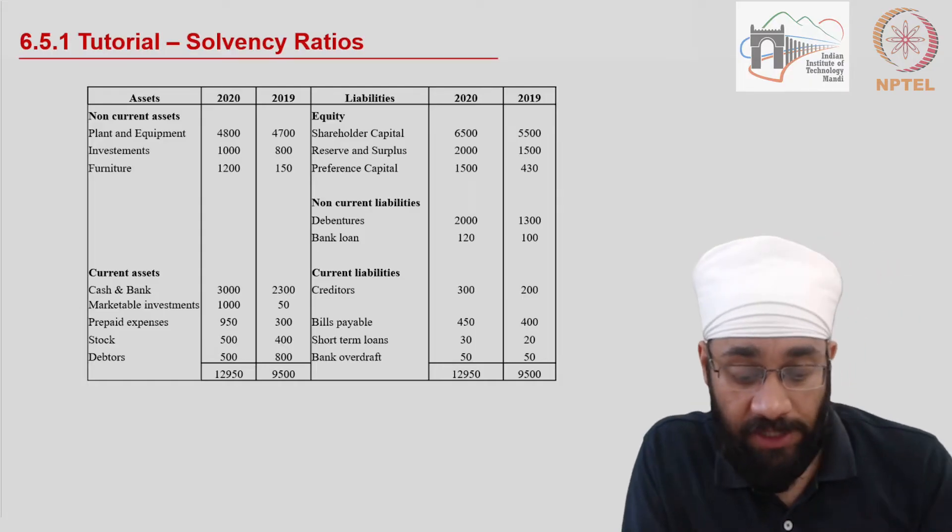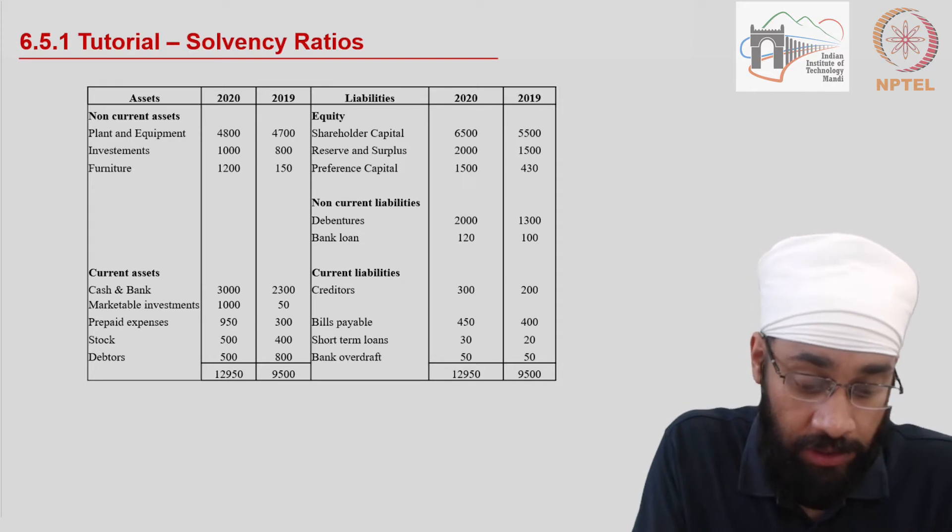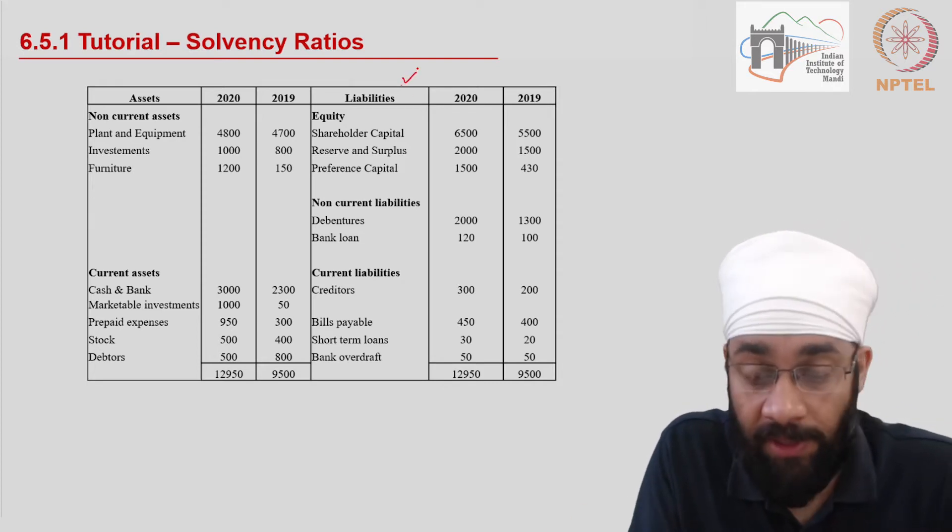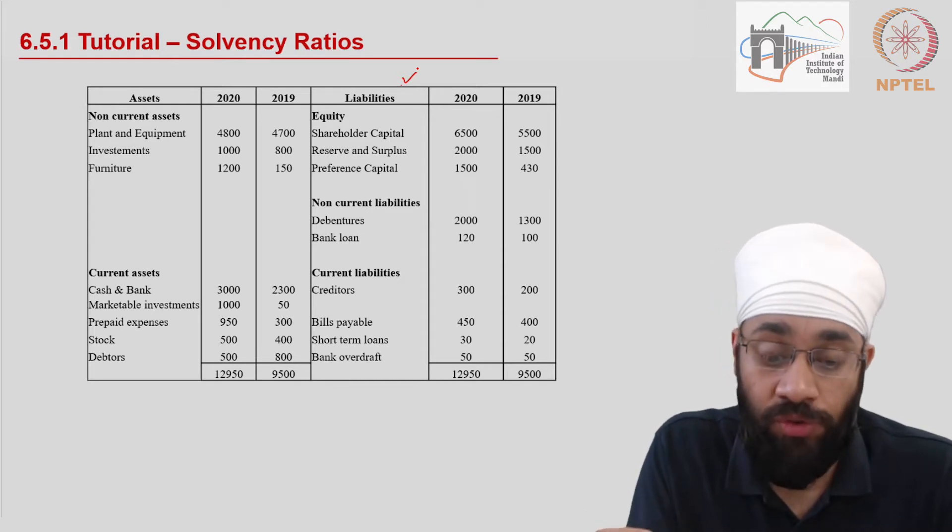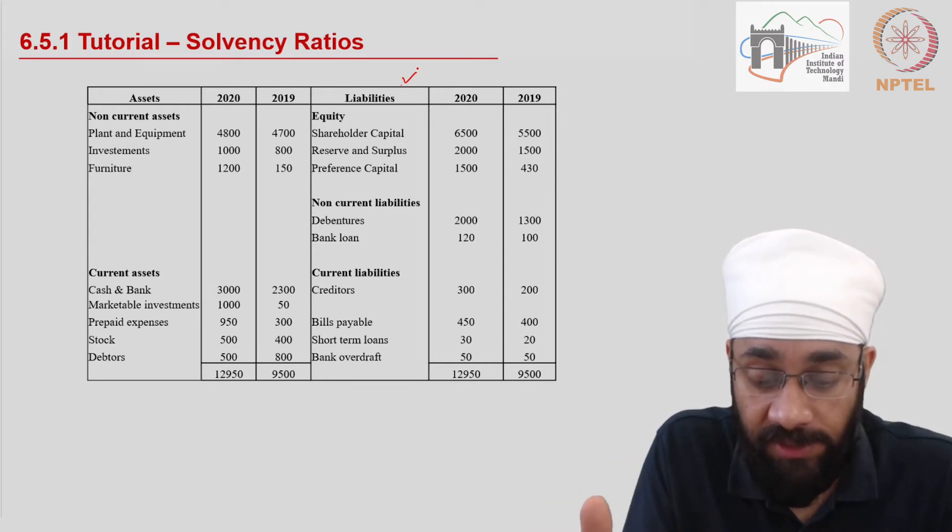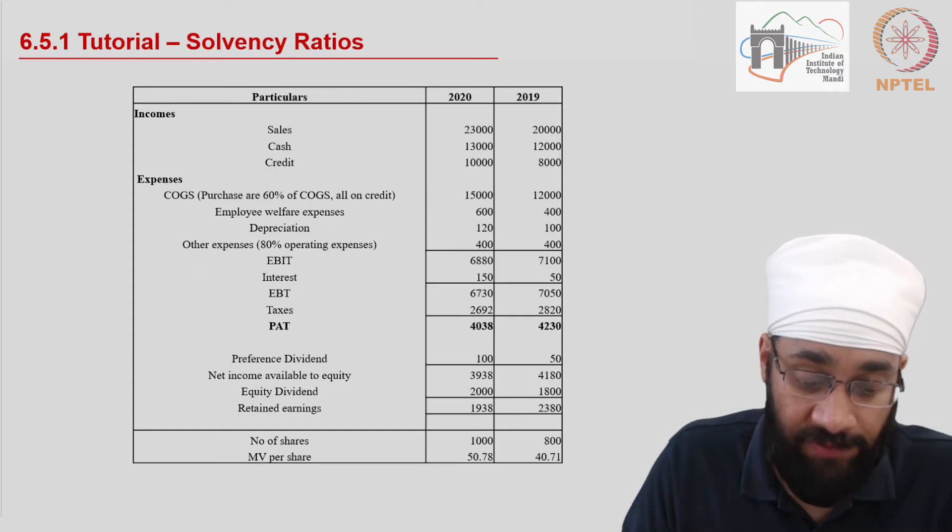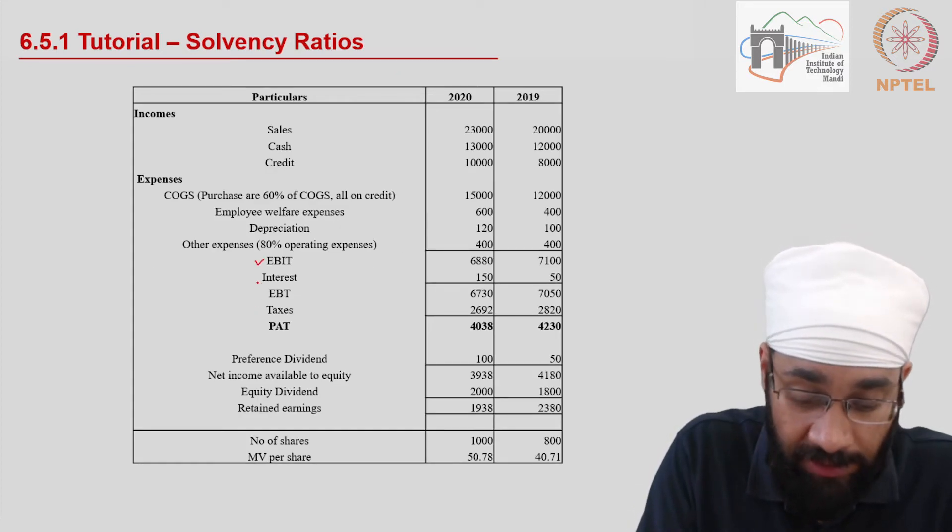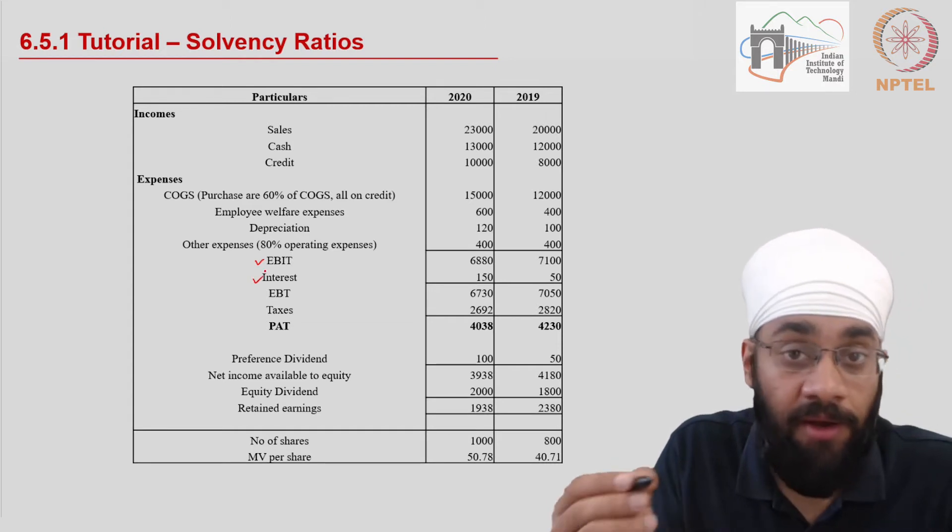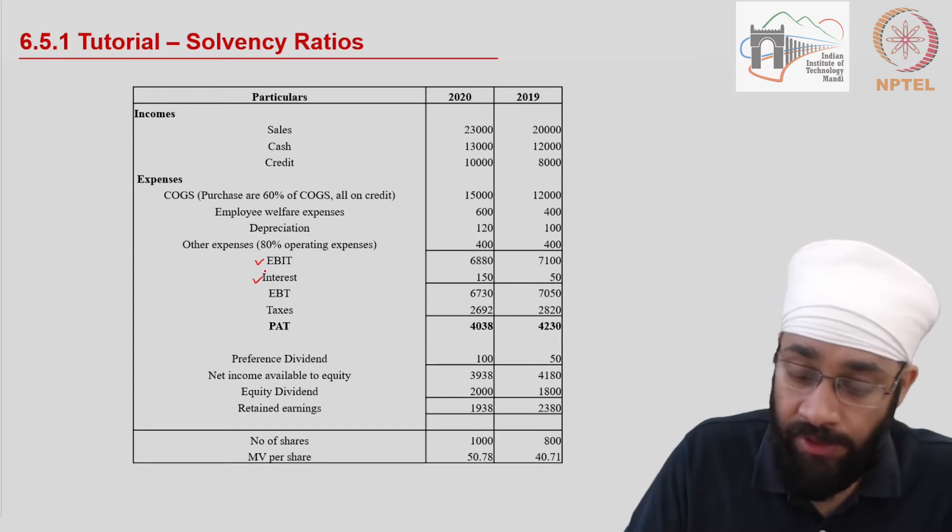This is the balance sheet and in the balance sheet we are interested in the liability side because it shows the internal and external liabilities of the business. We have the income statement where we are interested in EBIT and the interest amount. So let's get started.